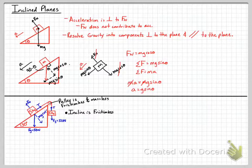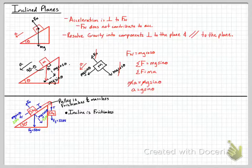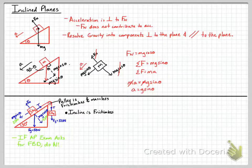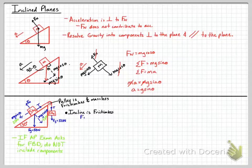We'll have Mg cosine theta perpendicular to the plane and Mg sine theta parallel to the plane pulling it down, which equals 25 N. Mg cosine theta will be 43 N — you can check that math. As a quick note for the AP exam: if asked to draw a free body diagram, do not include components. Draw only the forces actually acting on the object, because components are something we create to help solve the problem.